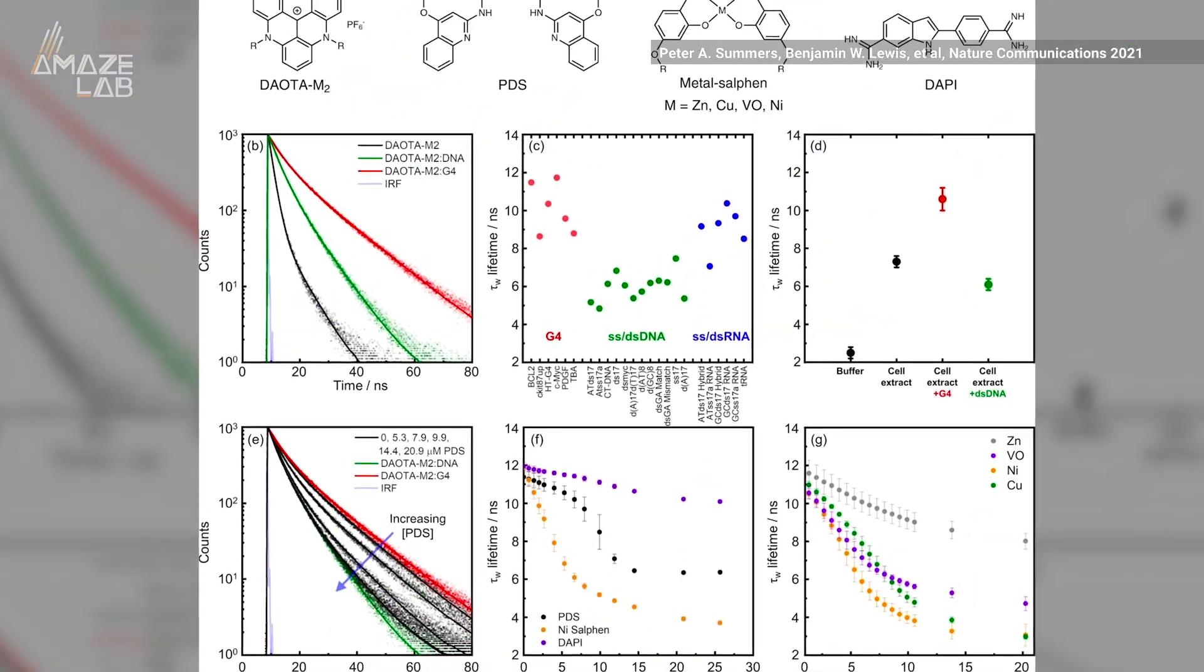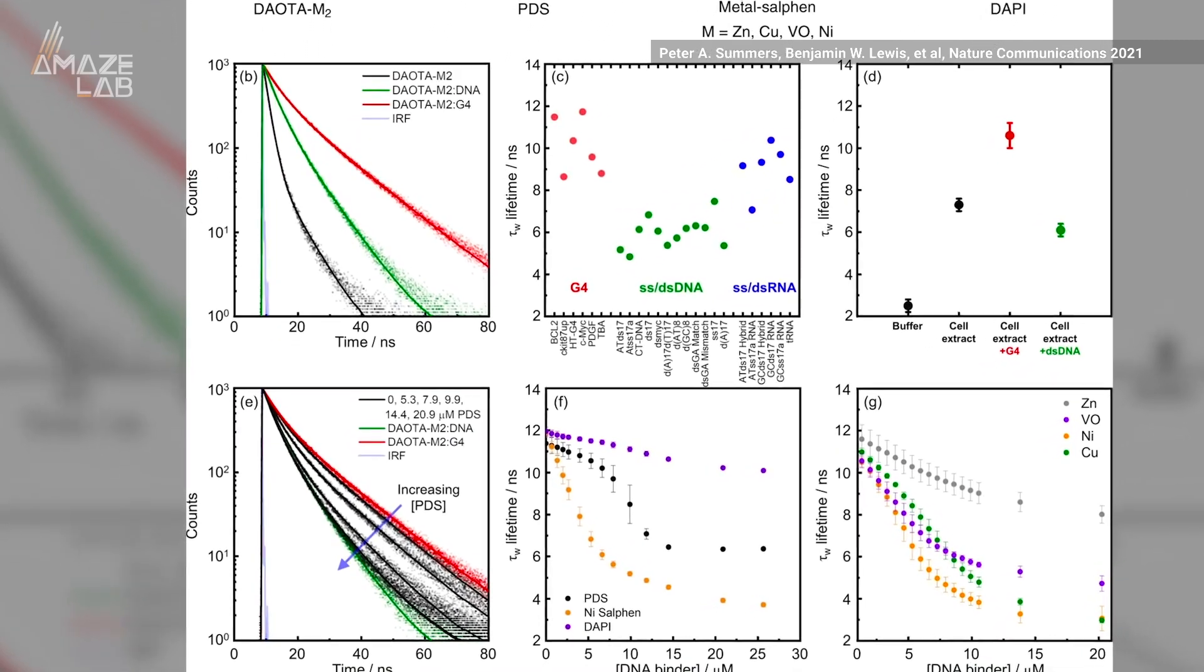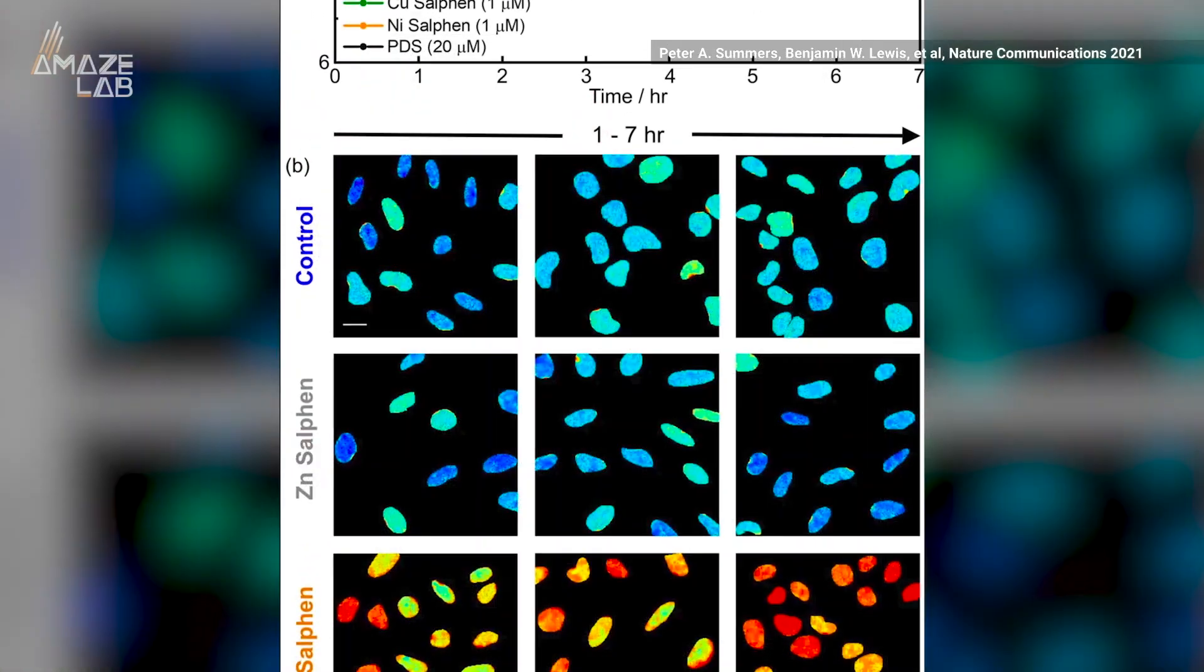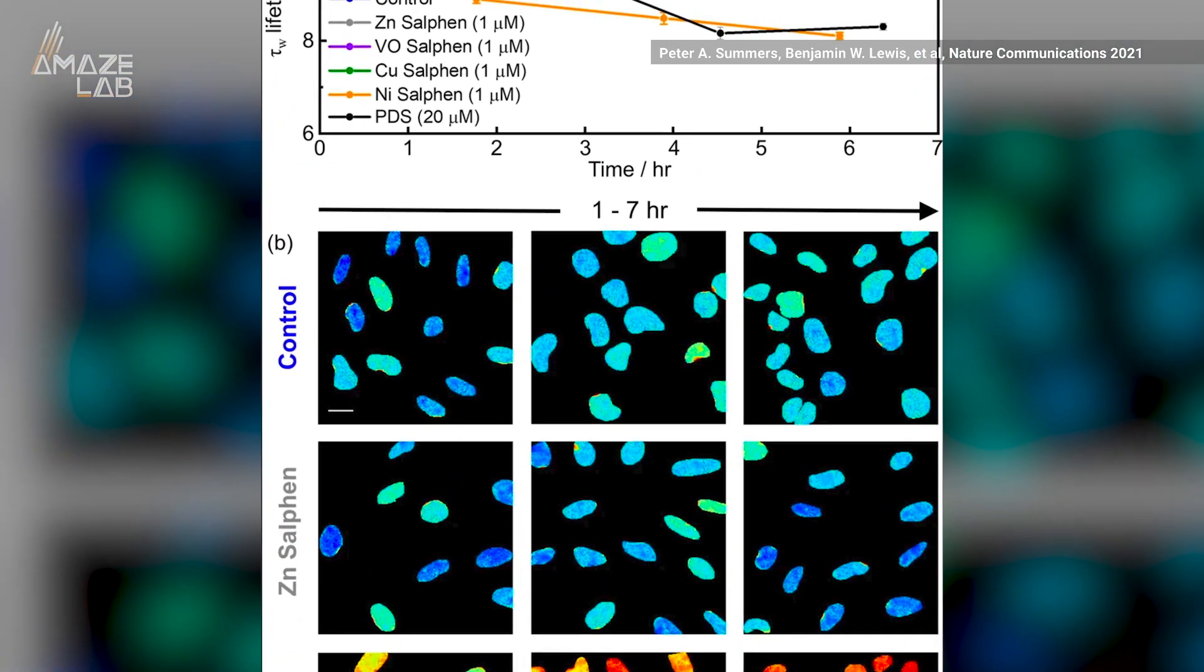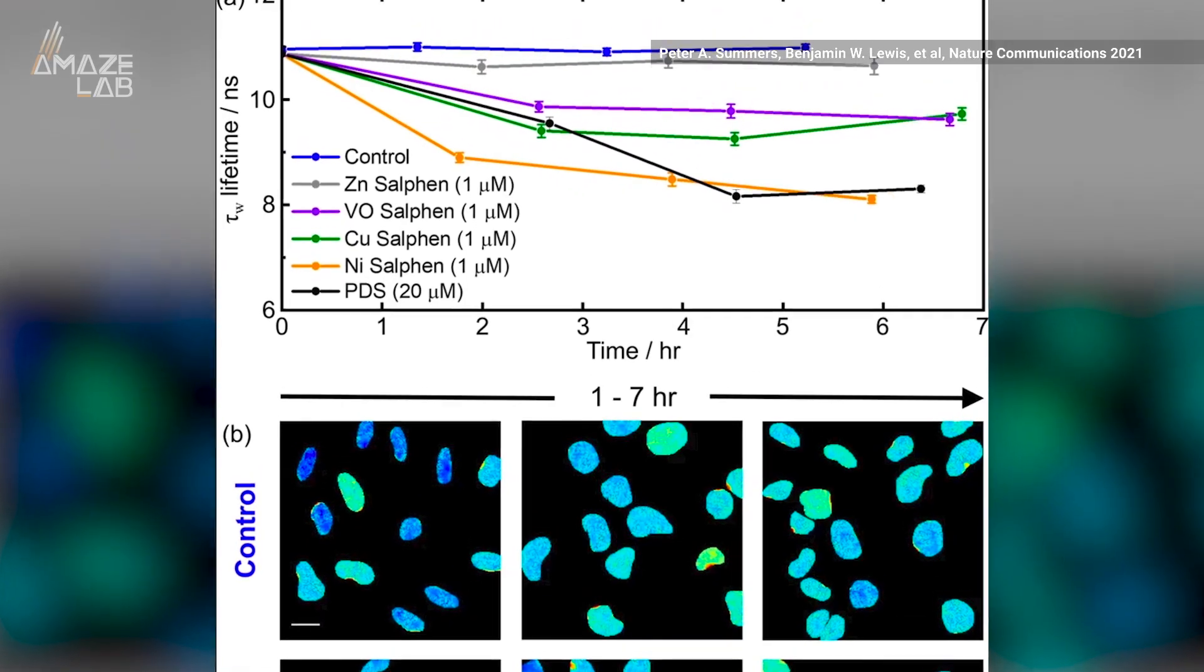By tracking how long the light shone, they were able to identify which chemicals interacted with four-stranded DNA in living cells. If a molecule attached to the DNA strand, the glowing DAOTAM2 would be displaced, making the light go out faster.